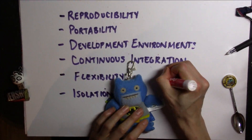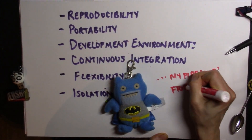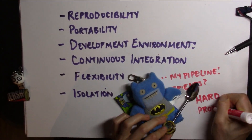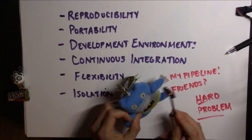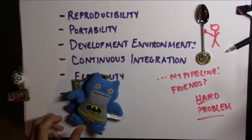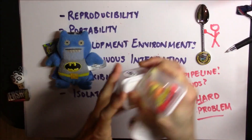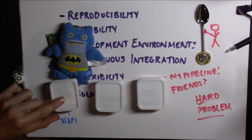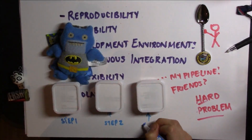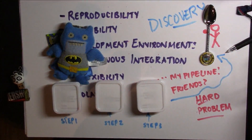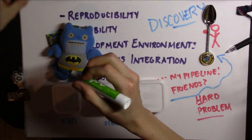Let's say that you're a scientist and you have this amazing pipeline that you run and it makes this awesome discovery and you want to share it with your friends. Well, that's a really hard problem because there are many differences in environments, in hardware, in software, even security. Just the simple thing of handing your software over to someone else and having them run it reproducibly is highly challenging.